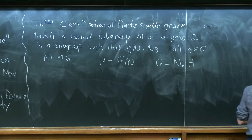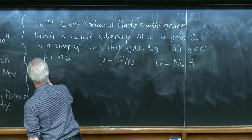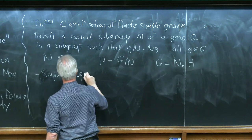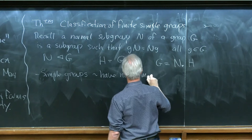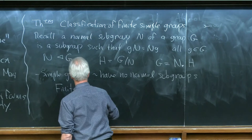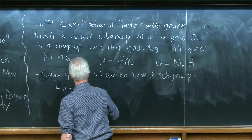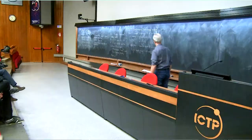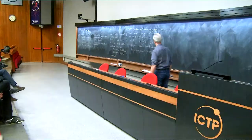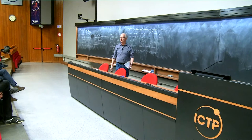Simple groups are groups that have no normal subgroups, so they can't be decomposed into smaller groups. You can think of a finite simple group as being like a prime number in the sense that you can always decompose numbers into products of primes. You can decompose finite groups using a chain of normal subgroups into smaller and smaller groups. So if you understand the finite simple groups, you understand finite groups in the same way that once you understand primes, you kind of understand all numbers.